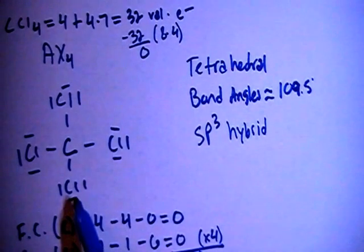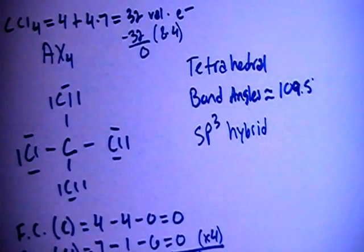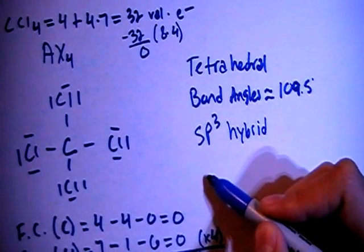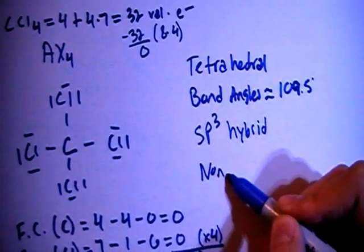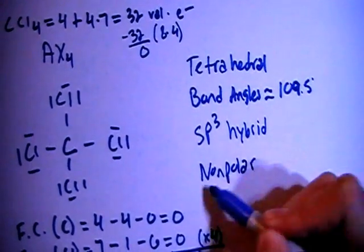And in this case, because all of the four surrounding atoms are chlorines, all of their dipole moments are going to cancel each other out, meaning that this is going to end up having a net dipole moment of zero, meaning non-polar.